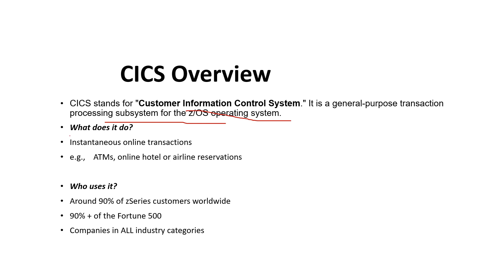Now we understand what it does. All users want immediate response to their information processing, so you need an online information processing system, also called OLTP — Online Transaction Processing System. For example, we can use the ATM: if you want to withdraw money, you just put in some requirements like your PIN and the amount you want, and after that it automatically proceeds. OLTP is used here, and apart from that, online hotel booking, airline reservations, and more all use Kicks only.